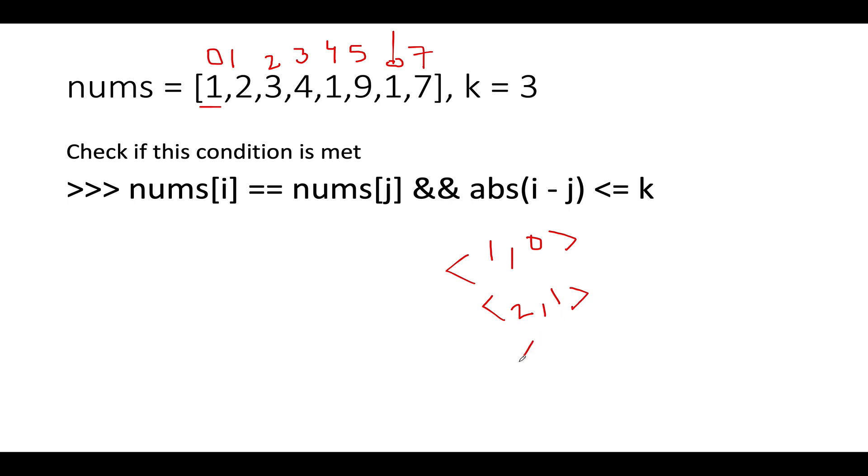The next element is 3, let's add 3 at 2nd index. Let's add 4 at 3rd index. Next element that we have happens to be 1. Is 1 part of the map? Yes, it is part of the map. At what index does it occur? It occurs at the 0th index.